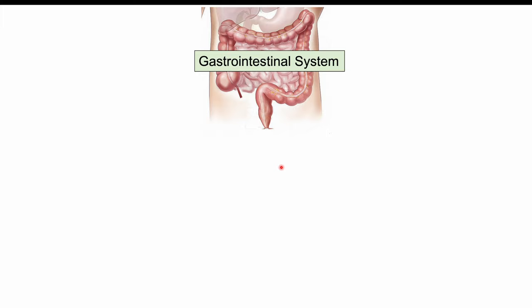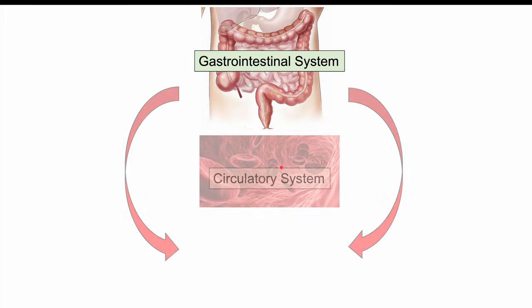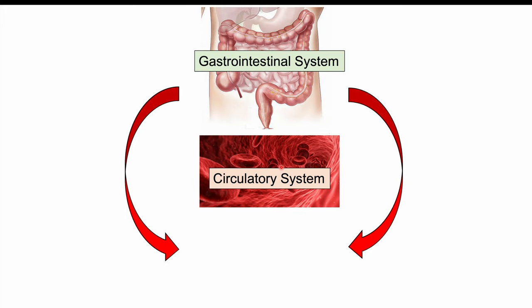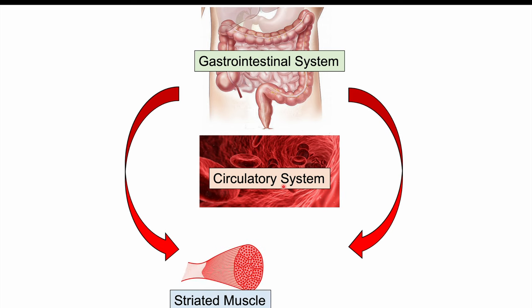Not all cases will lead to invasion into other bodily systems, but some cases can. In cases where the parasite does leave the gastrointestinal system, it enters into the circulatory system — the blood supply — and then can enter into striated skeletal muscle and other bodily systems as well.